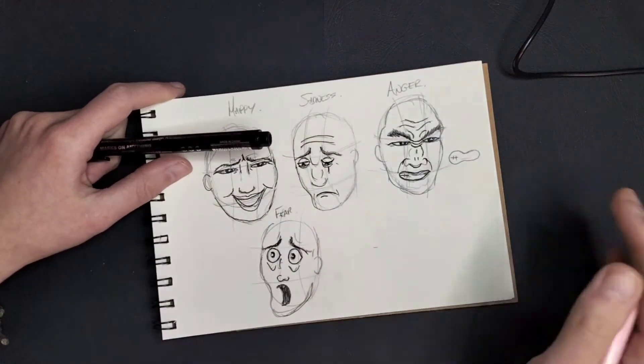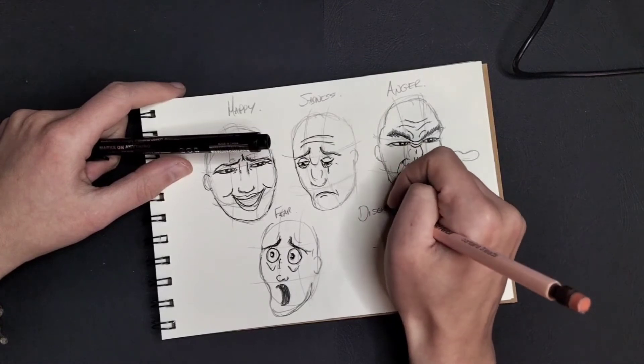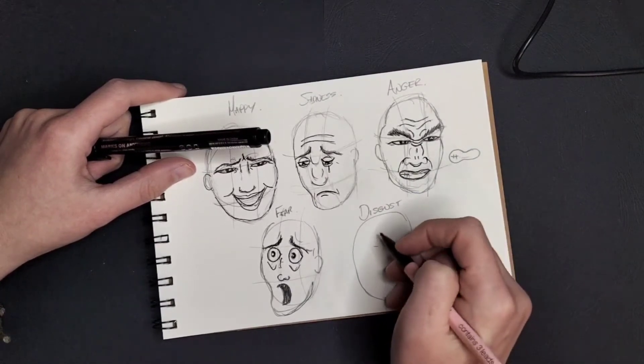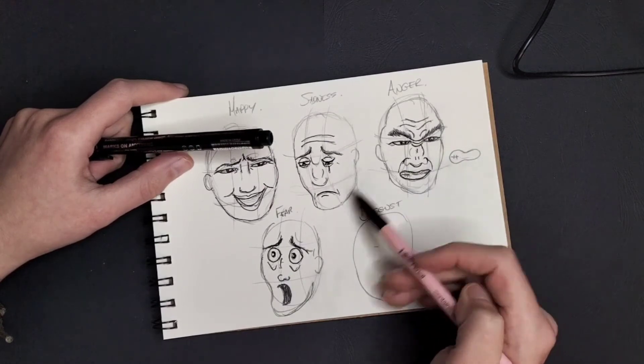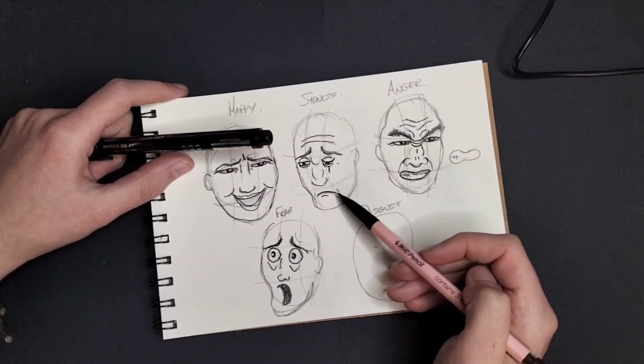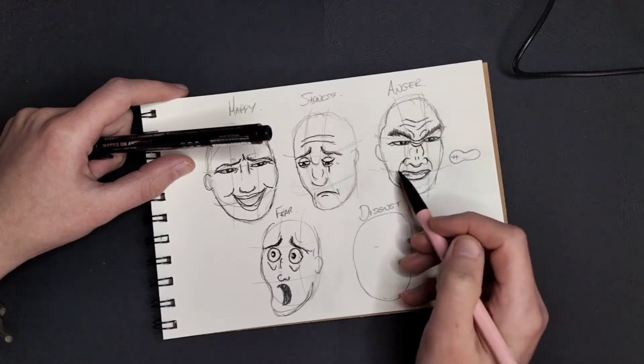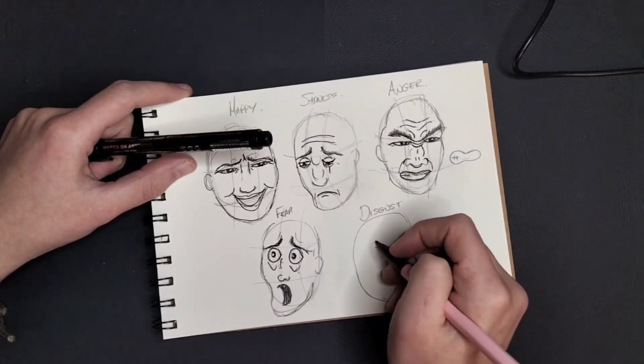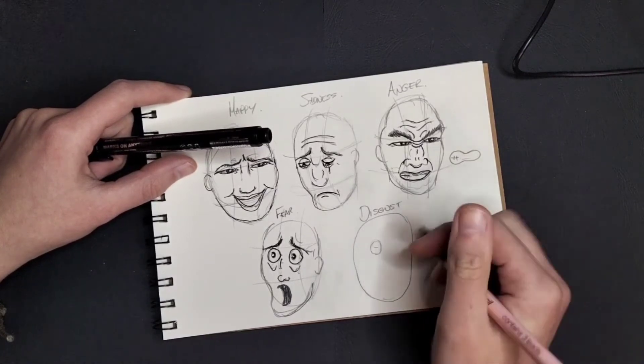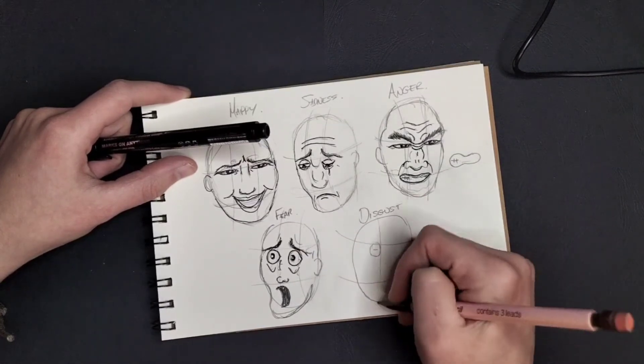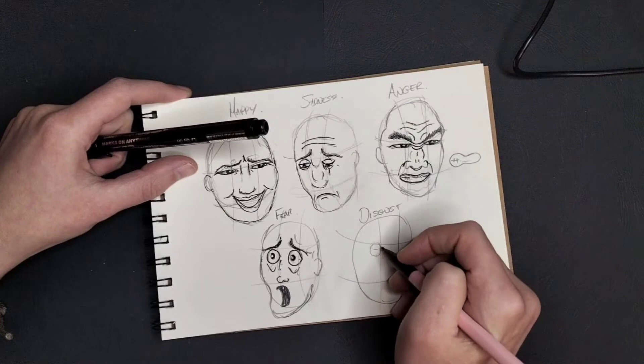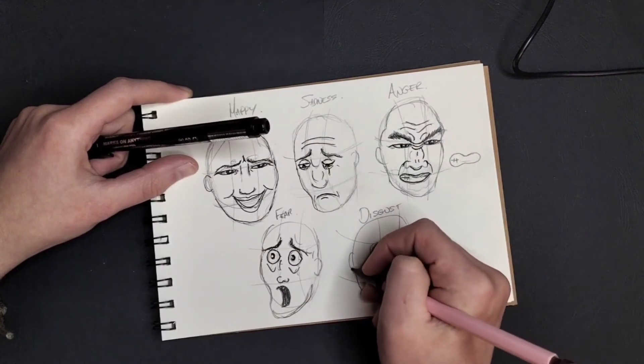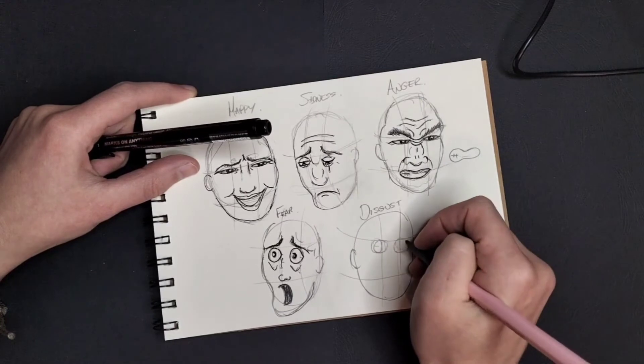And then last but not least, and the weirdest one on the list, is disgust. So when you think disgust, it's kind of like a mixture between anger, shock. Yeah, I don't know. I'd probably just kind of pertain to those two for disgust. So, shock in the eyes, I think. So let's just do the rules of thirds so we're not... Yeah, he's slightly off the eye. You don't have to use rule of thirds for the faces. I just do it because it helps. So we'll give him some wide eyes.